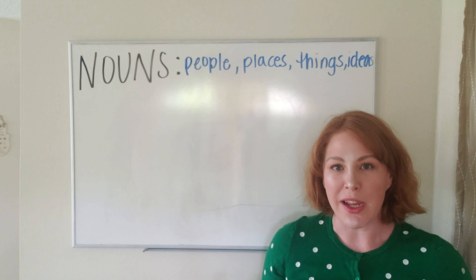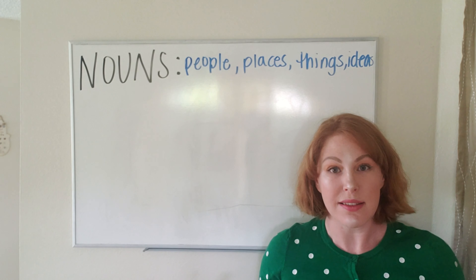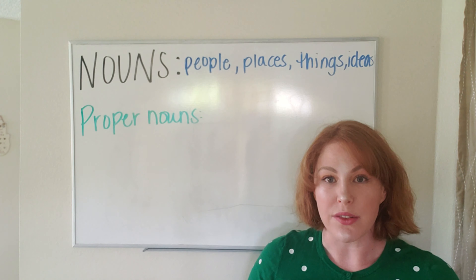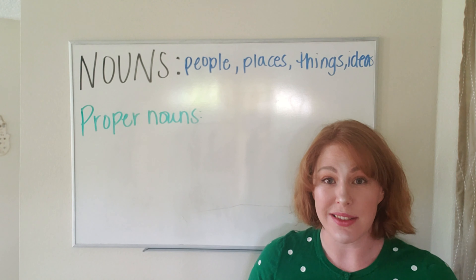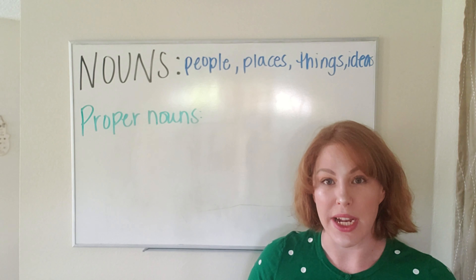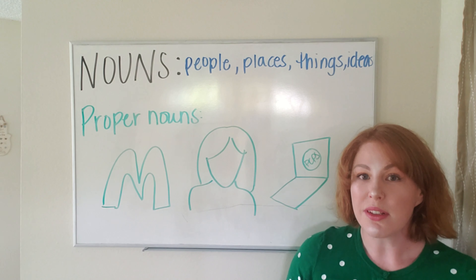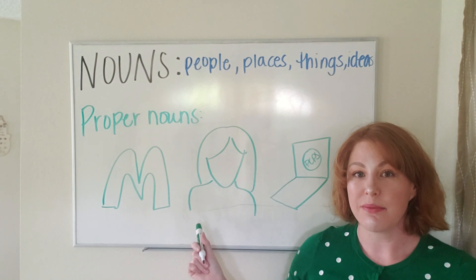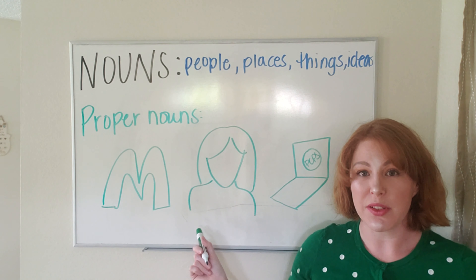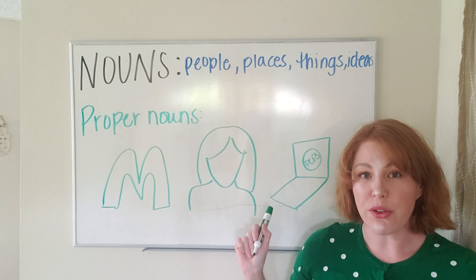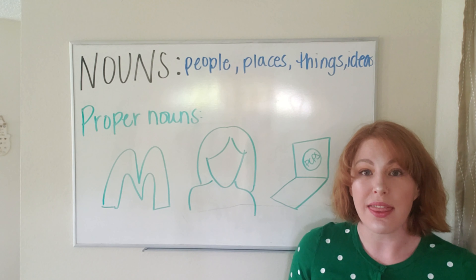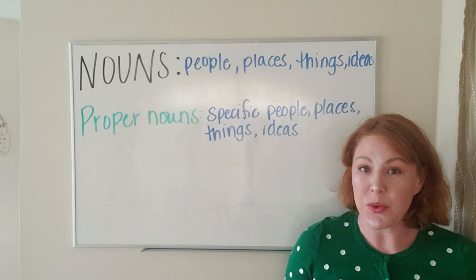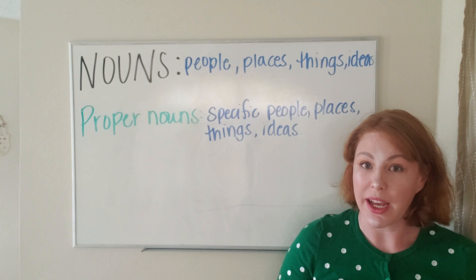There are three different types of nouns when you look at a basic sentence. The first is proper nouns. Proper nouns are specific persons, places, things, or ideas. For example, McDonald's is a specific place. Your teacher, Miss B. Hanley, is a specific person. Your school computer is a specific thing. Whenever you use a proper noun in a sentence, you always want to make sure that it is capitalized.